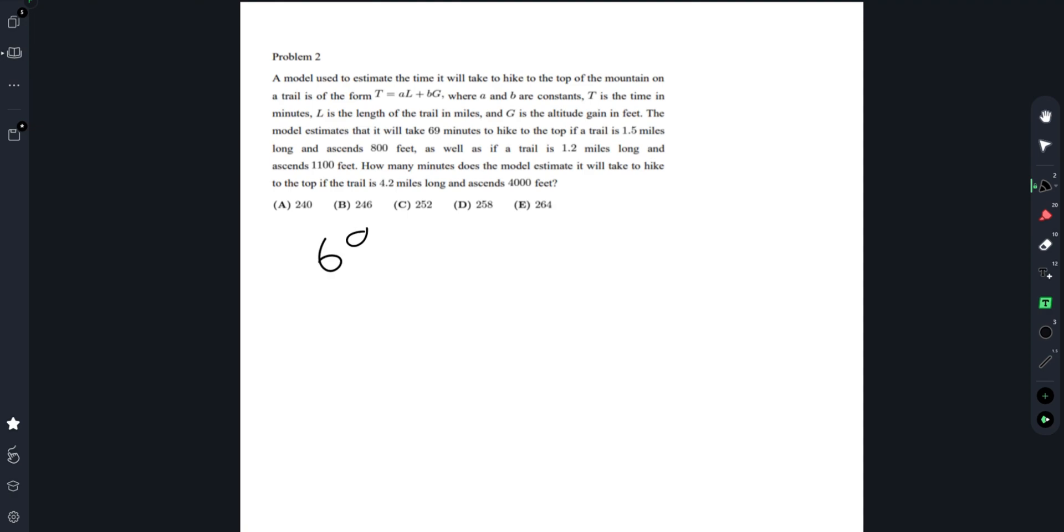We get the equation 69 equals 1.5A plus 800B. 69 also equals 1.2A plus 1100B. Subtracting these two equations, we get 0.3A equals negative 300B, which means A equals 1000B.